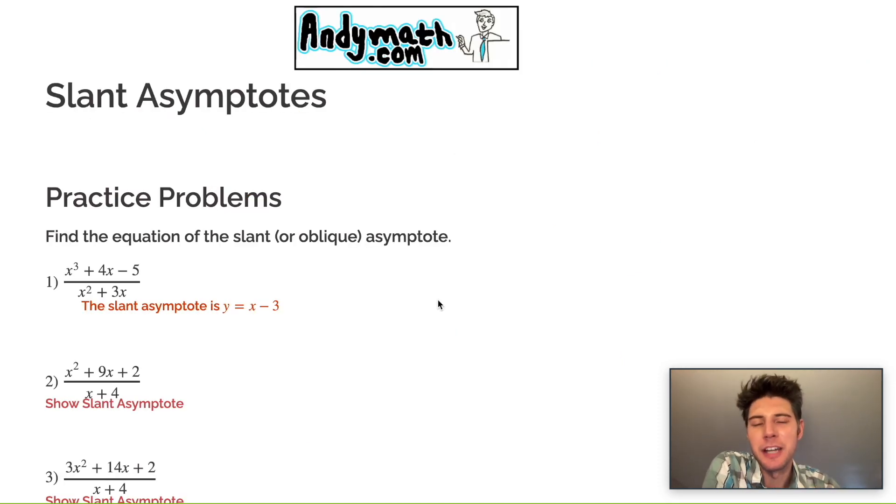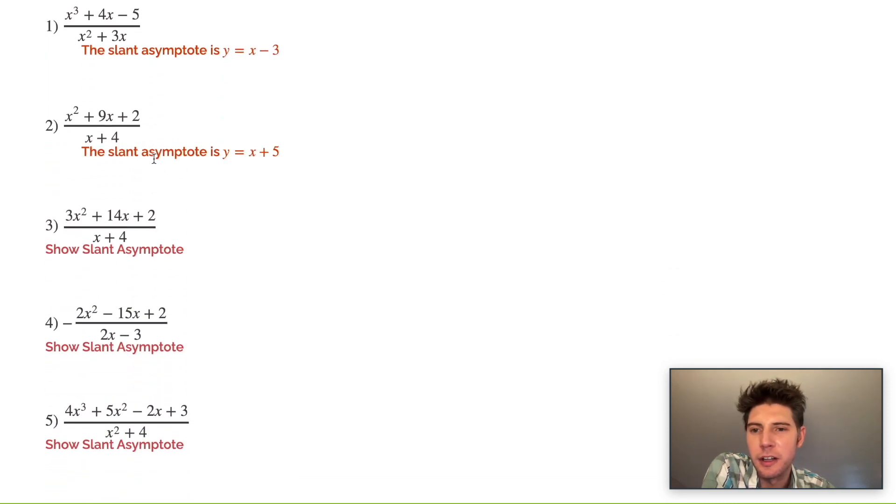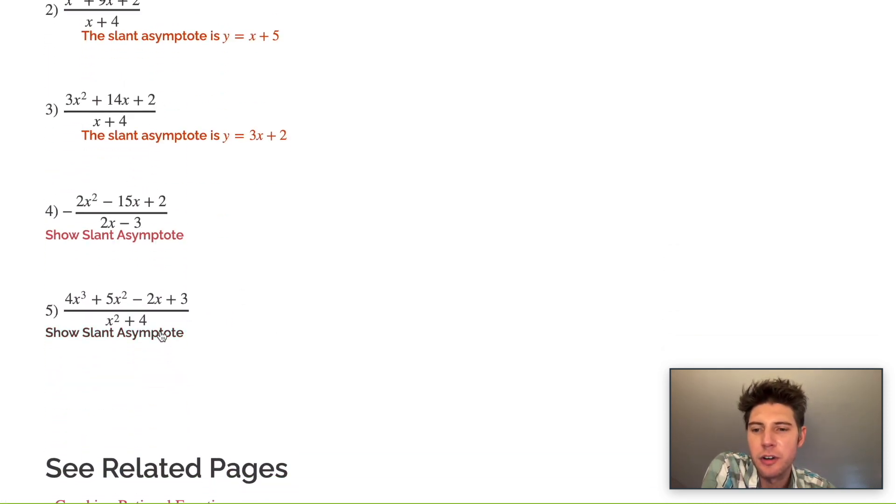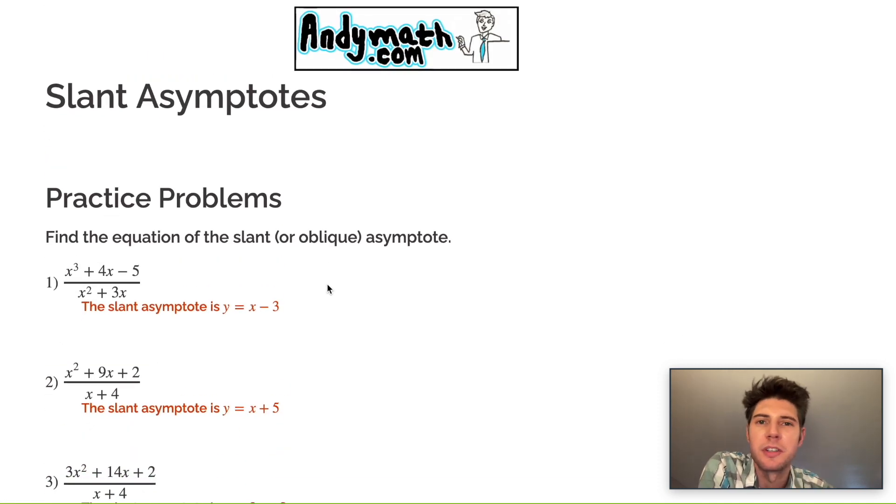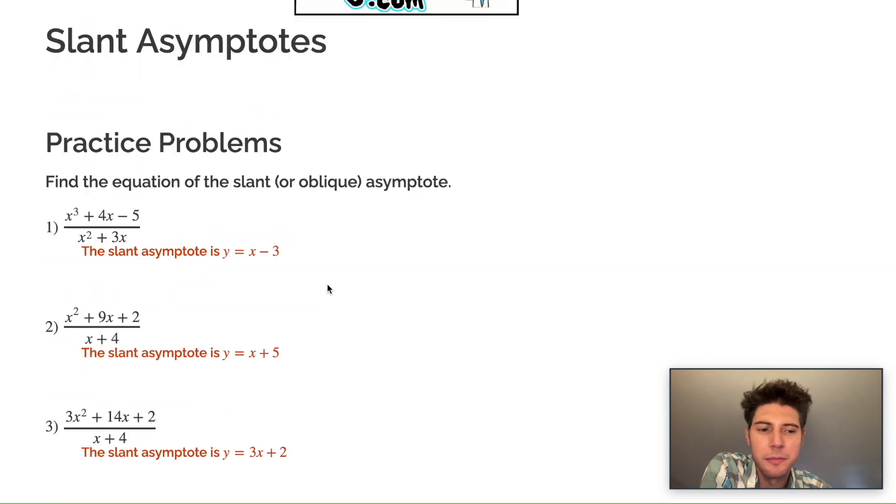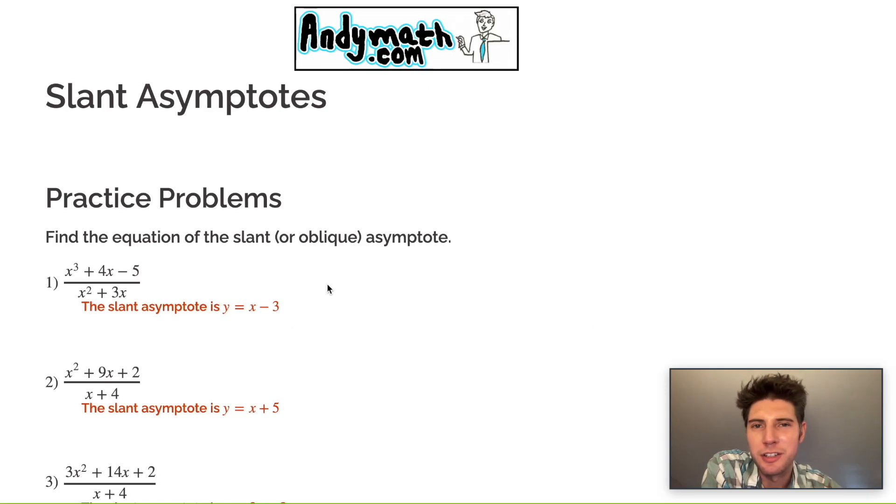If you guys want to try more of these, I have this page on andymath.com called slant asymptotes. There's more practice problems. Here's the one we just did with the slant asymptote y equals x minus 3. And here's a couple more. And they all have the answer listed. So you can try them out. There's also some related pages about graphing rational functions. You can learn how to do that. Vertical asymptotes and horizontal asymptotes as well work smoothly to learn that along with slant asymptotes. So feel free to check it all out. I'll include a link down below in the description. Please like this video and subscribe to my channel. It really helps. Comment below if you have any other math questions and I'll try to answer it for you. I'll talk to you soon. Bye.